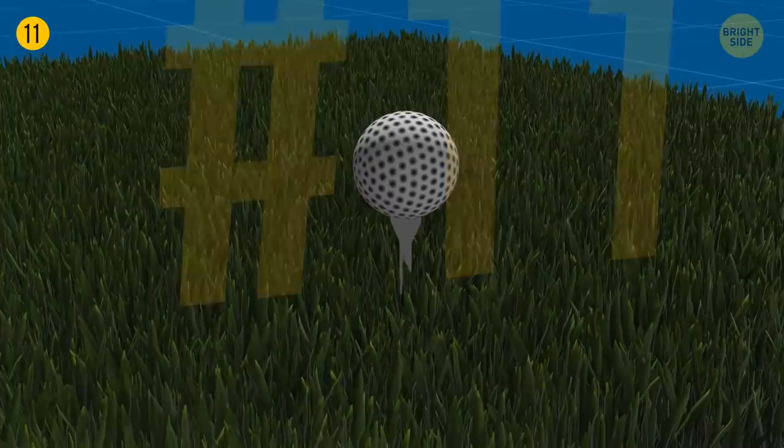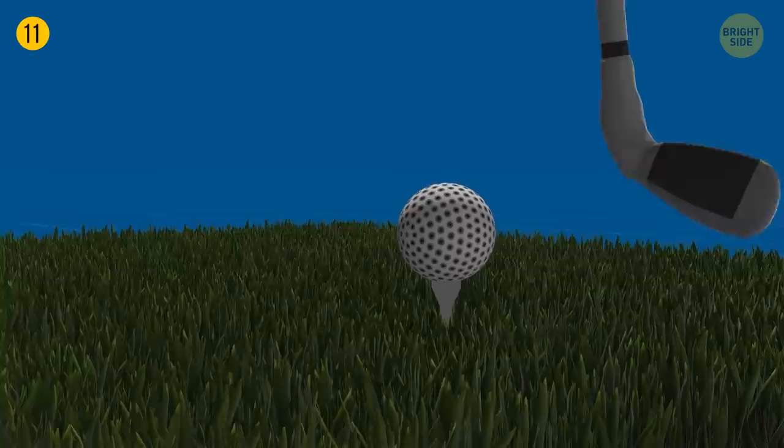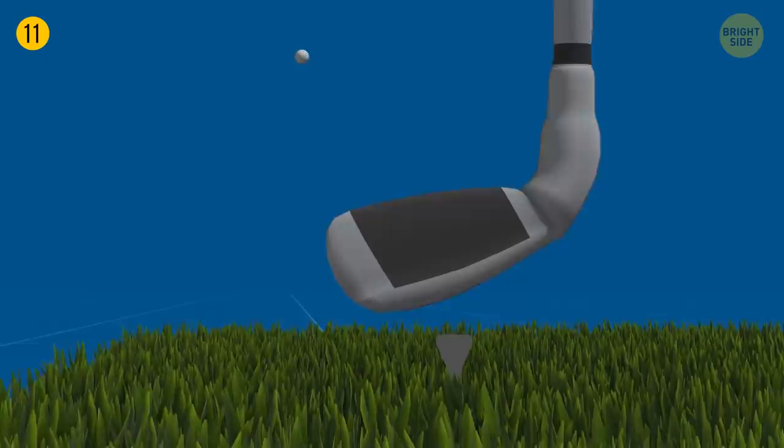Originally, golf balls were smooth. They have a dimpled surface now because players noticed that overused balls with damages flew better than brand new ones. At some point, manufacturers started producing balls with dimples.